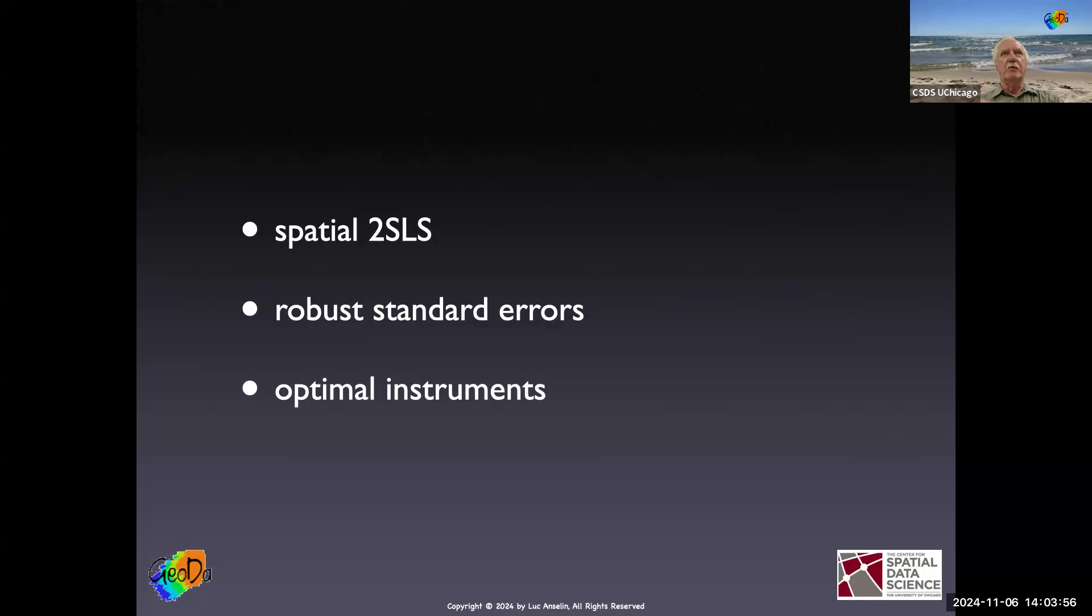If you recall, the challenge with two-stage least squares was what are these instruments? What are instruments that are uncorrelated with the error terms and still correlated with the endogenous variables that they're supposed to replace? And that's not necessarily easy to find. In the spatial case, it will be easy to find because we have this thing called the reduced form.